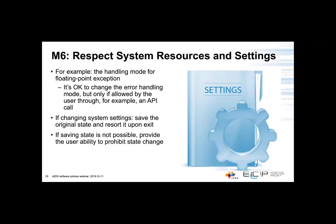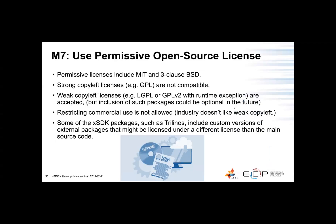In mandatory policy number six, we ask the packages to respect system resources and settings. A good example: since a lot of packages require numerical computation, floating point exceptions are important. We ask that if packages choose to change the floating point exception mode, they reset that setting upon exit. And if it's not possible to change the setting, we ask the packages to provide a programmatic way to prohibit the changing of the setting, so the user can keep their settings and resources in a very specific state.